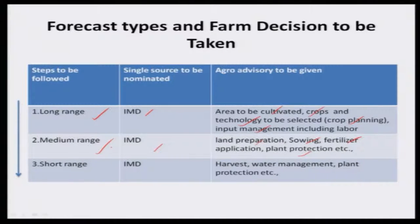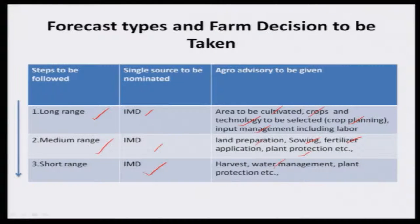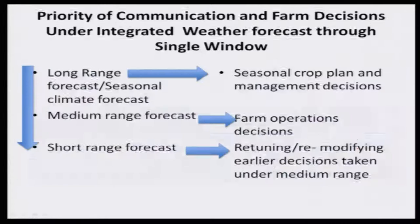Then within three to seven days, they will be using IMD short range weather forecast. By that — for harvest, when rain comes postpone your harvest; when rain comes postpone your water management or irrigation; when rain comes, don't do plant protection. Like that, you can take your decision accordingly. This is the integration of the weather forecast to be received from the organizations.